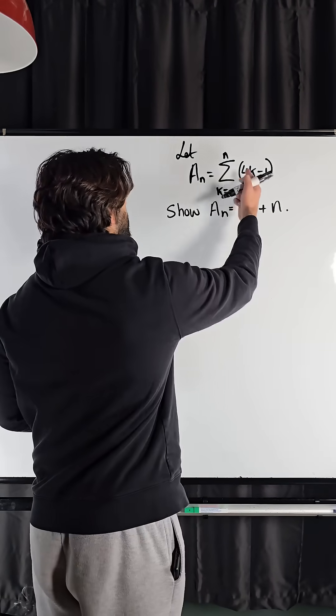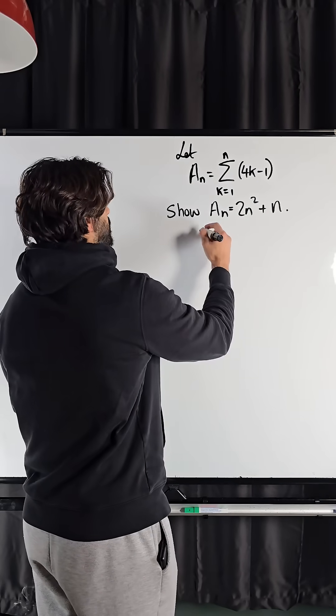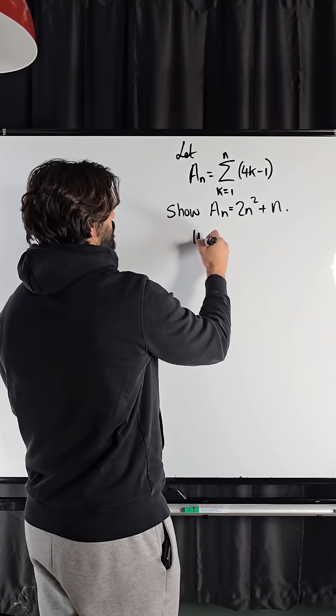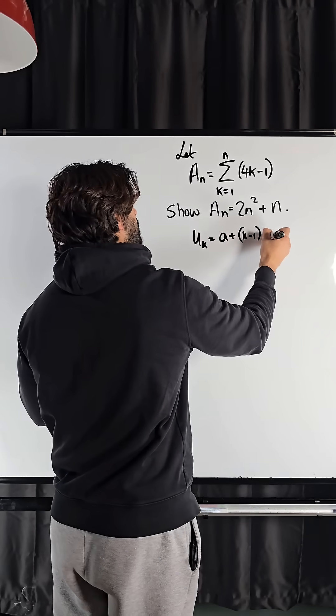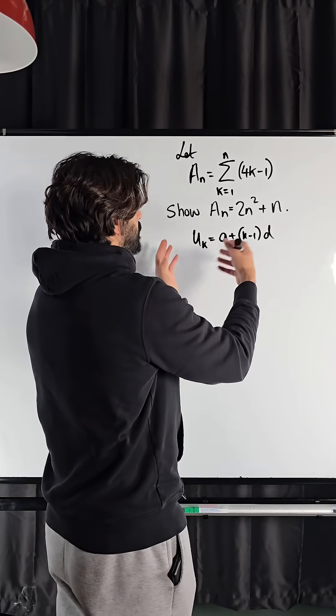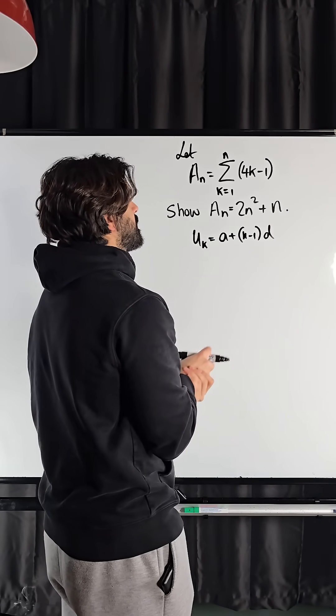Okay, so here is my sequence. In this case, we're dealing with k. U_k is a plus k minus 1 times d. But if you guys mix up the n's and the k's, it makes no difference.